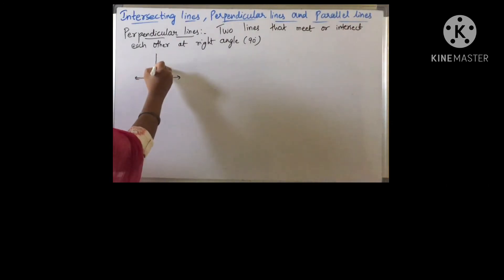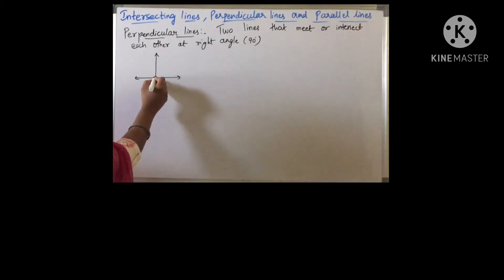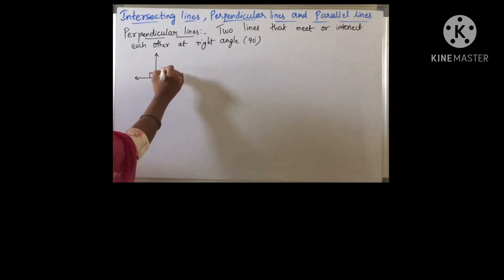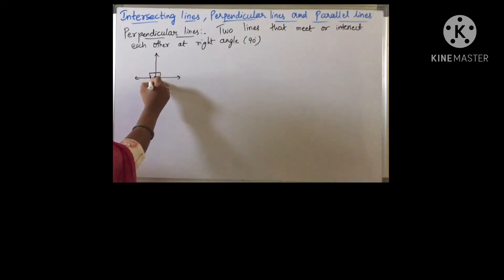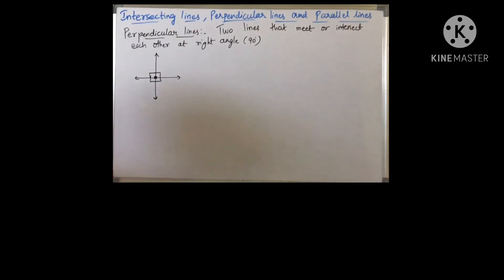Suppose this is one line and another line intersecting at this point. If you observe here, the point where they intersected is having 90 degrees. So then we call them perpendicular lines.